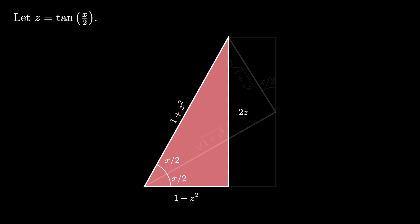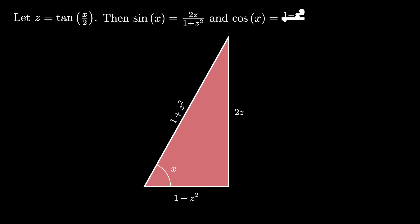This right triangle also has another angle with a measure of x over 2 plus x over 2, which is x. From this new triangle, we see that the sine of x is 2z divided by 1 plus z squared, and cosine of x is 1 minus z squared divided by 1 plus z squared.